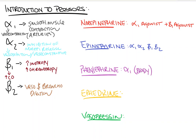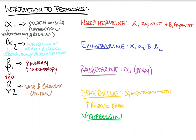Ephedrine is another drug commonly used in bolus doses in the operating room — typically around five milligrams at a time. This drug acts as a sympathomimetic, meaning it causes indirect stimulation of alpha and beta receptors by increasing the release of our endogenous epinephrine and norepinephrine. As a result, ephedrine boluses will increase blood pressure and cause tachycardia. It should be noted that in patients who are baseline unable to produce their own epi and norepi — such as catecholamine-depleted trauma patients or chronically septic patients — this drug may not work as well.